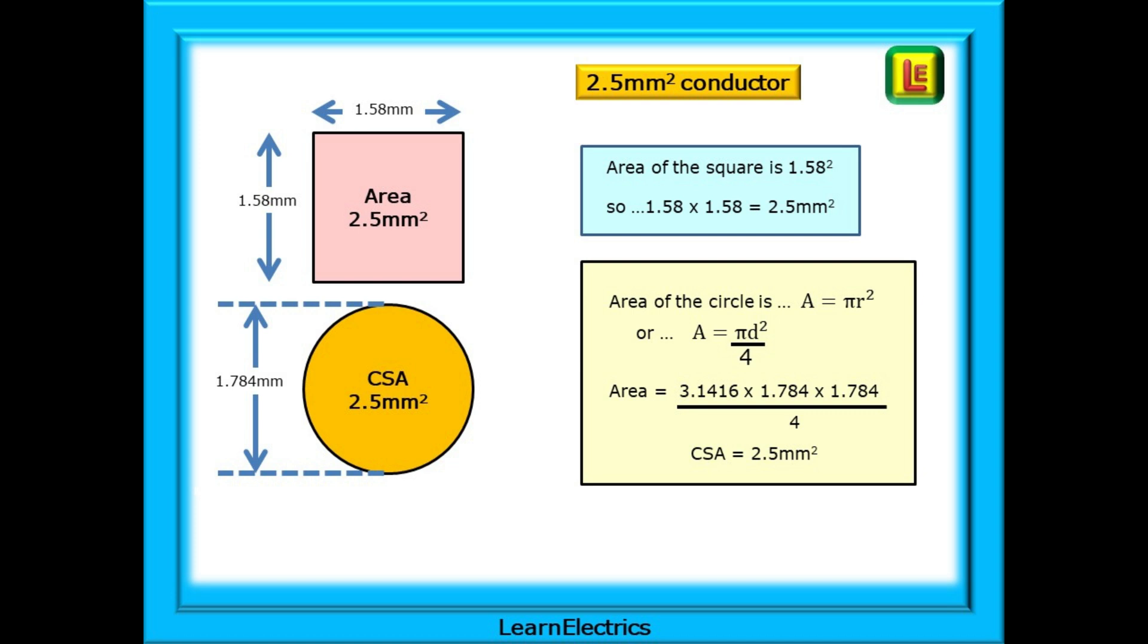And the circle would use the Pythagoras theorem where the area of a circle is pi r squared. Or it can be pi d squared over 4. It comes to the same thing. And this is the version that we will use pi d squared over 4. Put those numbers into a calculator and you'll have an area for the circle a CSA of 2.5 square millimeters.